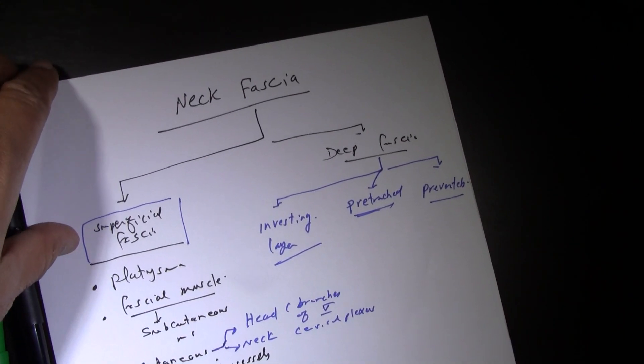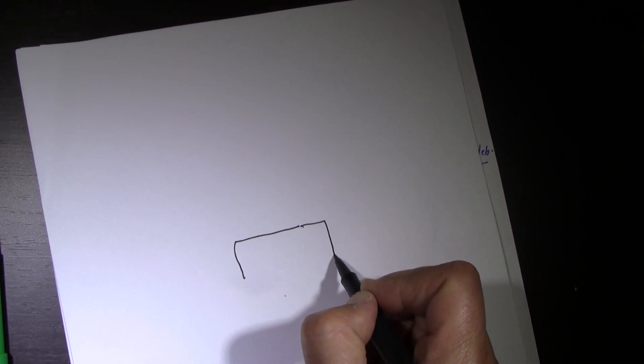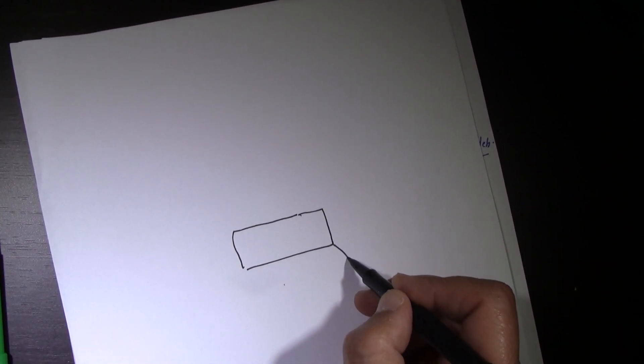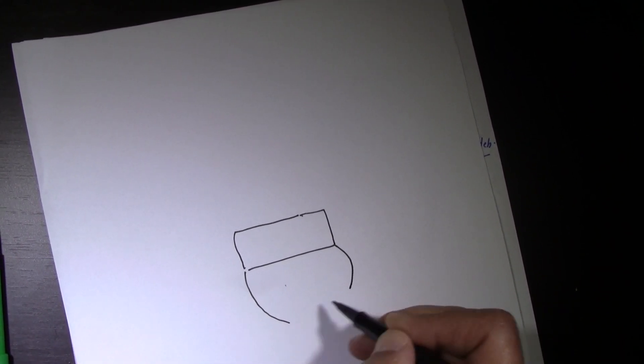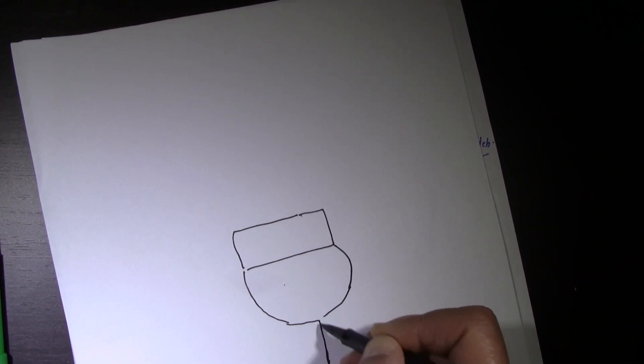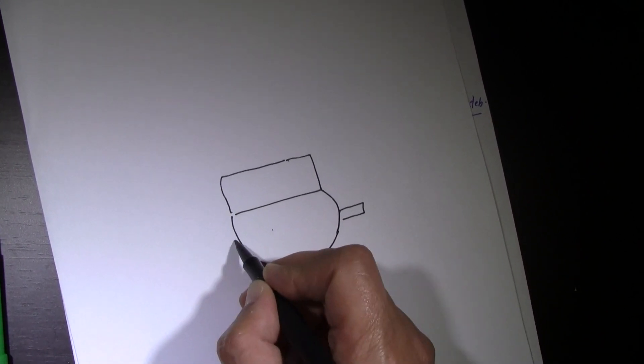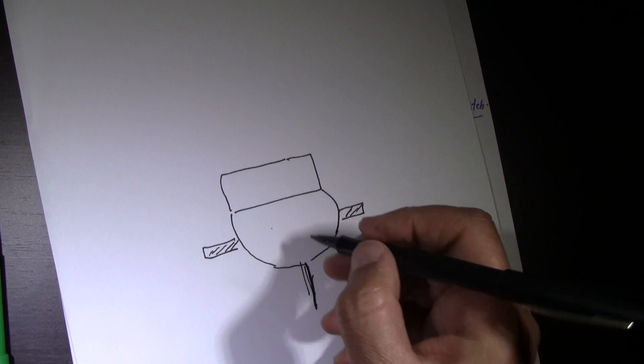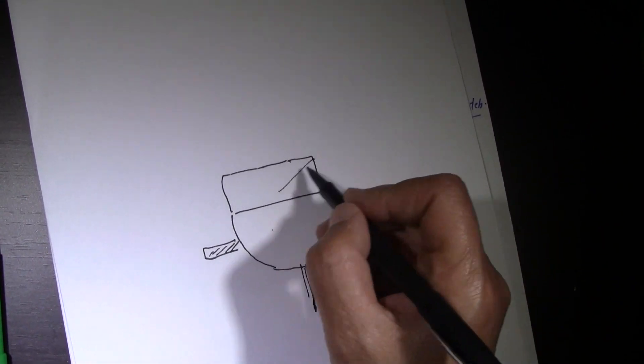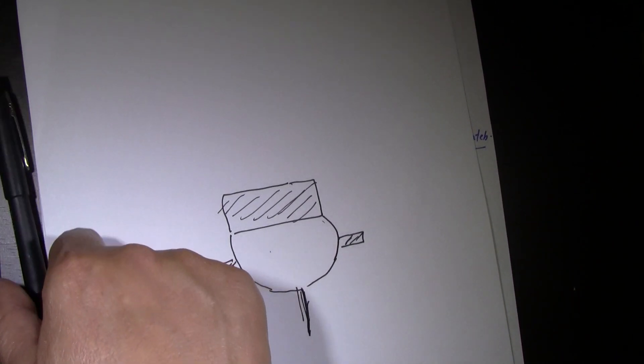Let us imagine the location and arrangement of this deep fascia by taking a cross-section of the neck. In the cross-section, we see the body of the vertebra and the vertebral arch extending posteriorly to the spine. There is also the transverse process on each side and the vertebral foramen.